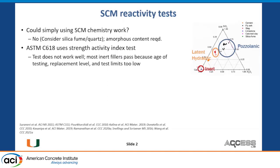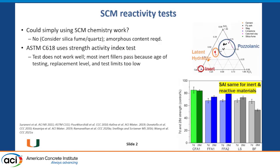Can we use the strength activity index? It doesn't really work all that well. A value of 70, 80, or 90 on the strength activity index is really all the same. A lot of inert fillers will pass it because the age of testing, replacement levels, and the test limits are too low. If you're getting an SAI of 100, that's great — that's probably a reactive material. But below that, 70, 80, it's all the same, just considering error bars and changed water demand.